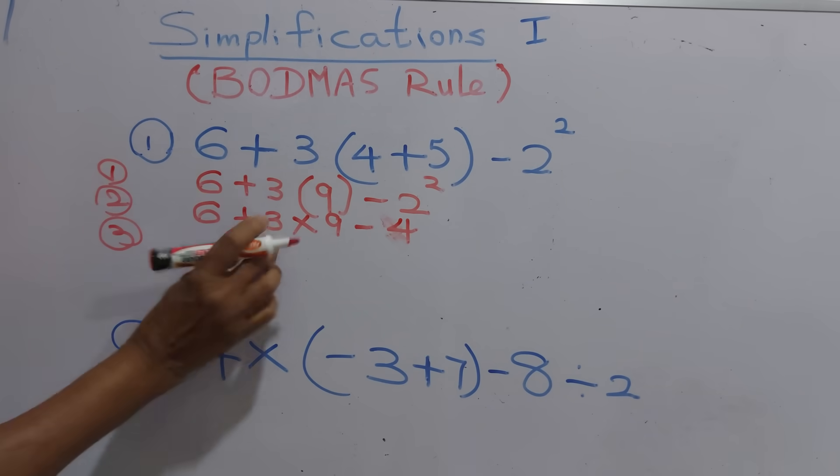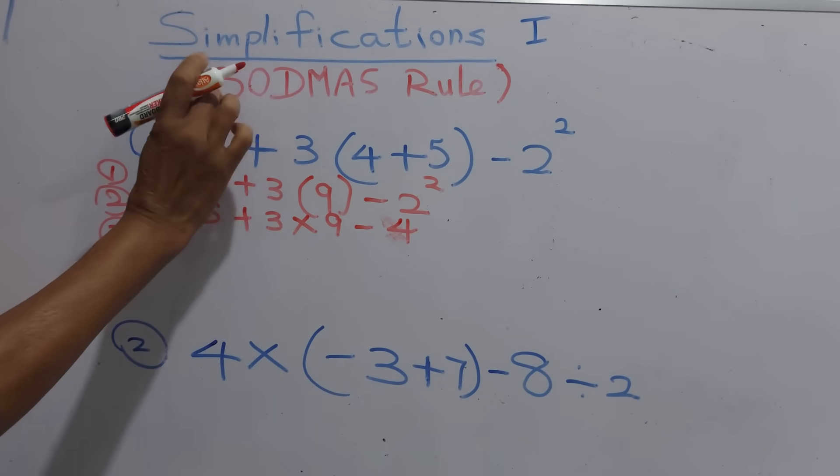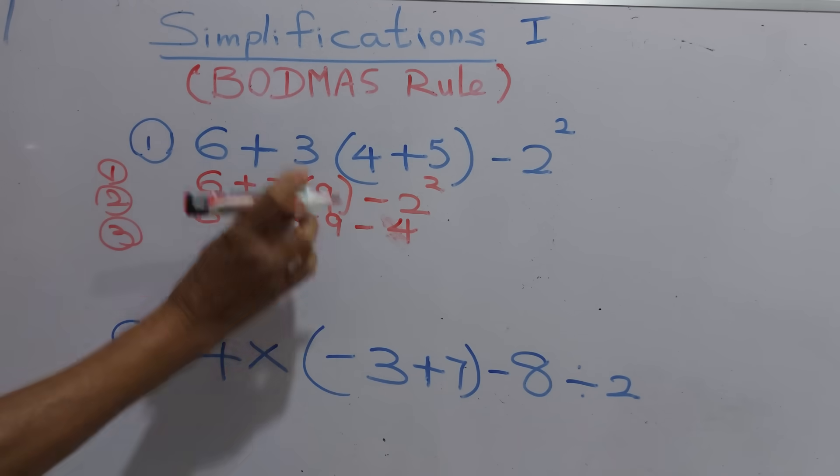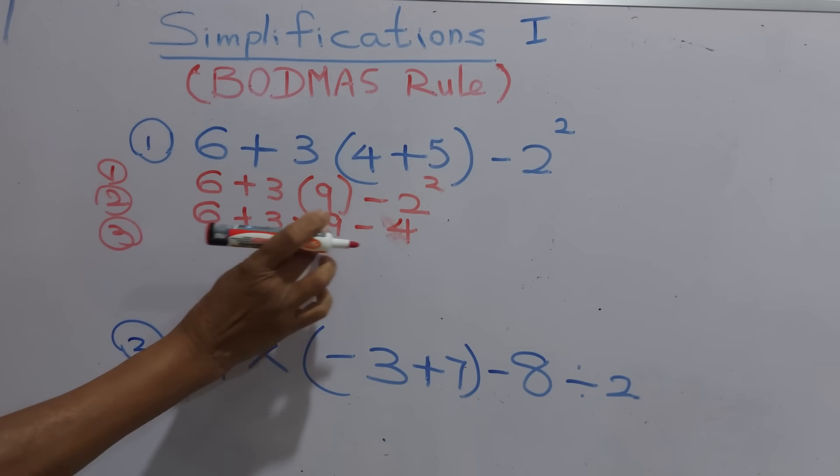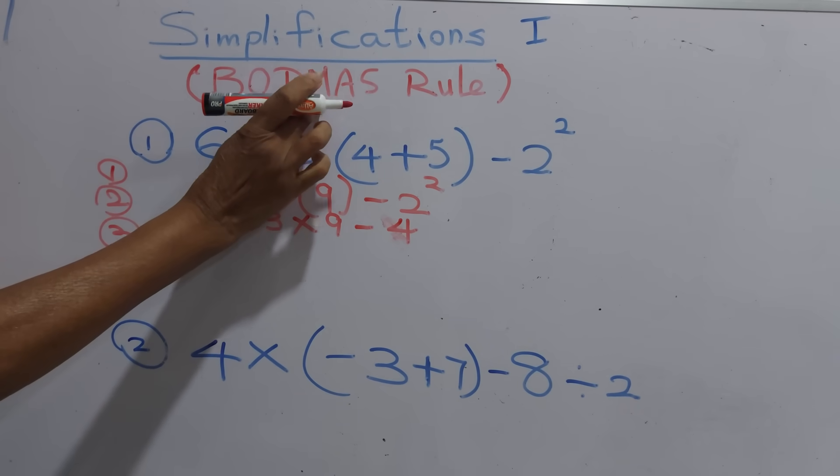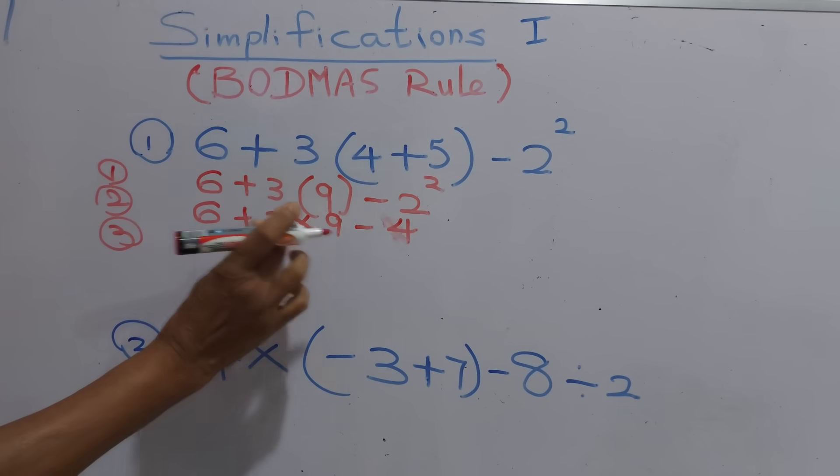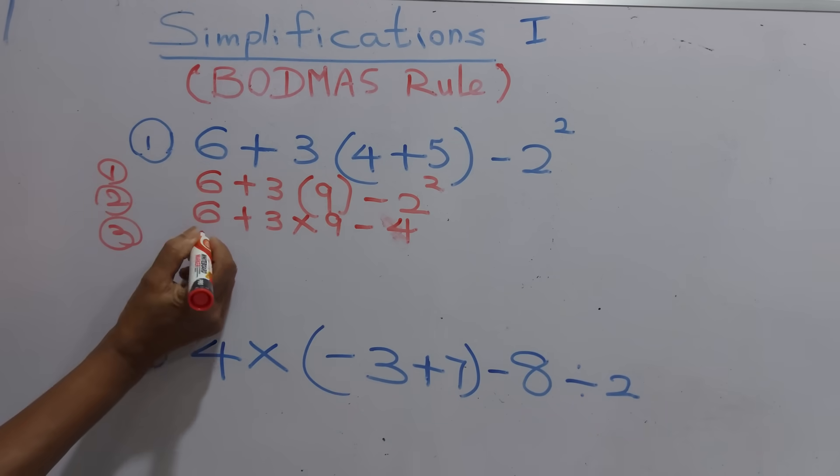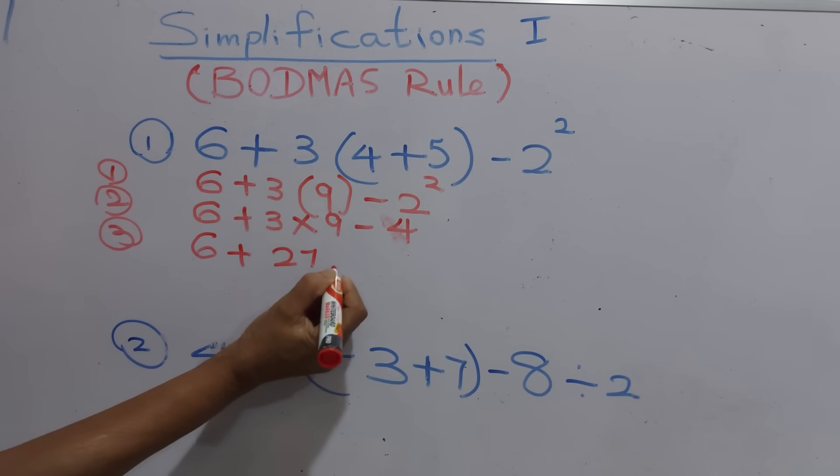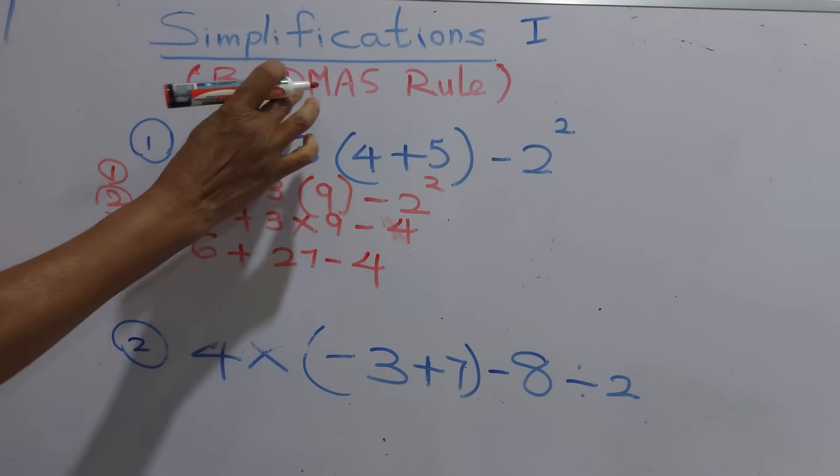Now we are going to the order D, that means divisions. Are there divisions here? No. Then we move to the next letter M, multiplication. It's here. Third step is 6 plus 3 into 9, which is 27, take away 4. That is the third step.